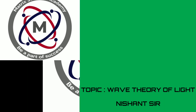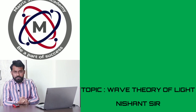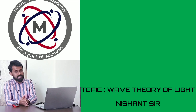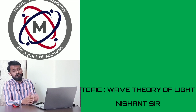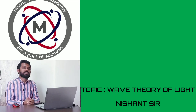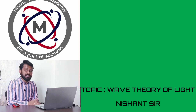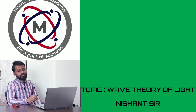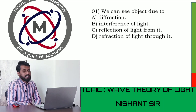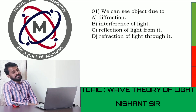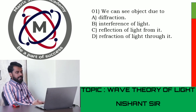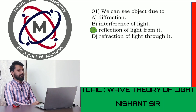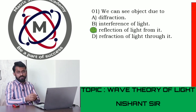Now let us revise all the things covered today with a small test. Each question gets roughly 10 to 15 seconds. First question: we can see objects due to - answer is C - reflection of light from it. We can see any object because light bounces off the surface and enters our eye. Second question: Huygens' principle is used to - answer is D - obtain the new position of the wavefront geometrically, by drawing the tangent to all secondary wavelets.